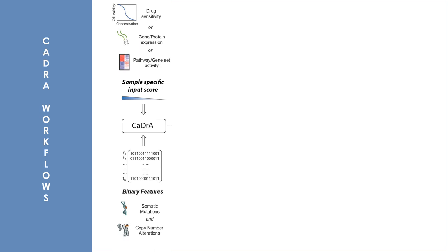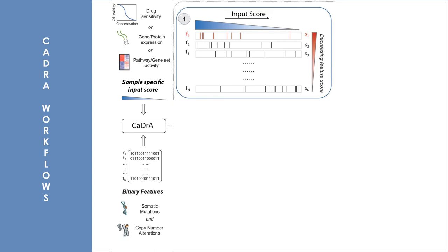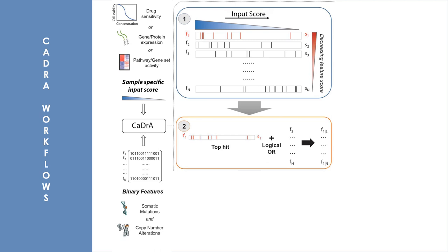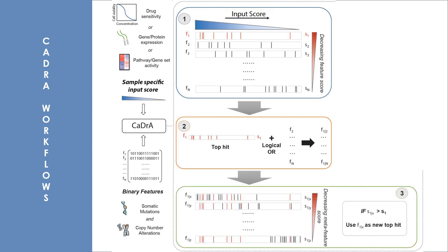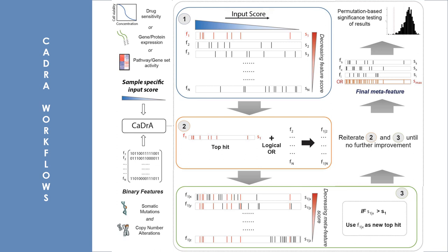First, CADRA chooses a starting feature, which is either the feature having the best score based on a given scoring method or a user-specified starting feature. In the next step, the union logical of this feature with each of the remaining features in the dataset is taken. Each union meta-feature is linked with its corresponding score. If any meta-feature has a better score than the hit from the previous step, the new meta-feature is chosen for the next iteration. Steps two and three repeat until no further improvement in score can be obtained. The final output is the set of features whose union has the local maximum score and its permutation-based p-value.